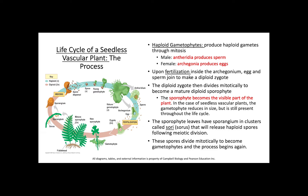Upon fertilization inside the archegonium, egg and sperm meet to form a diploid zygote. The diploid zygote then divides mitotically to become a mature diploid sporophyte. In seedless vascular plants, the sporophyte is the visible part of the plant — the gametophyte is still present but reduces in size and is less visible throughout the life cycle.